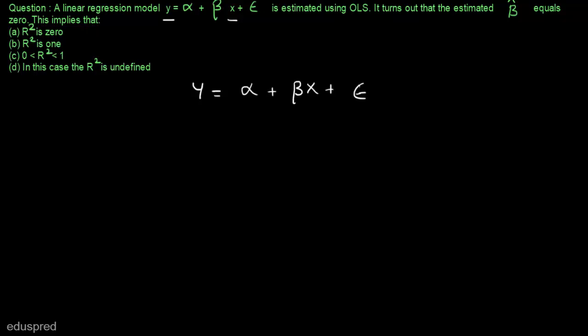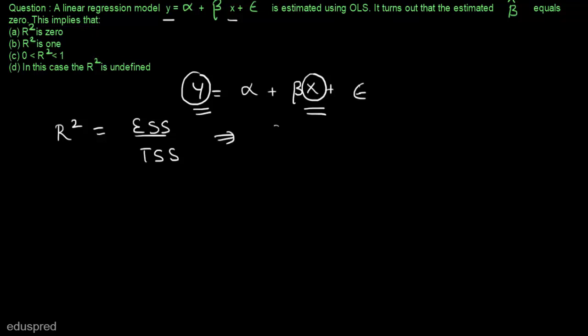Now let's see what happens to R-squared when beta hat equals zero. R-squared equals ESS divided by TSS, where ESS is the explained sum of squares and TSS is the total sum of squares. R-squared measures the percentage of total variation in Y explained by X. If beta hat = 0, then X has no influence on Y, so ESS = 0, which implies R-squared = 0.